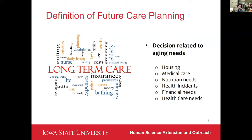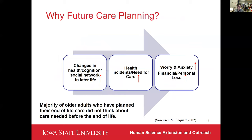Future care planning is defined as consideration of financial, medical, personal health, and environmental support for future needs due to chronic illness or health events that would threaten their independence. That is, future care planning can be broadly defined as an information-seeking and decision-making framework with the purpose of maintaining good quality of life as older adults face health events and care needs.